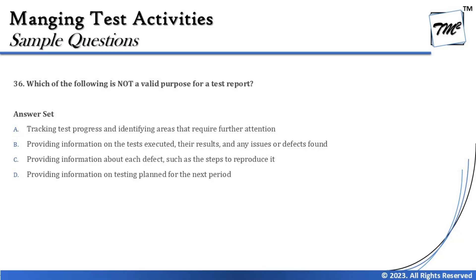Option C says providing information about each defect, such as steps to reproduce it. We need to differentiate between a defect report and a test progress report. Option C is talking about detailing defects including steps to reproduce, which means you are describing a defect report. When it comes to the test progress report or test summary report, we do not detail it to that extent — it is just high-level statistical information about what happened in a particular period.